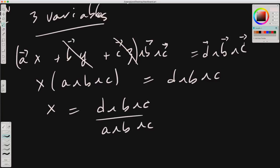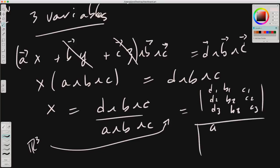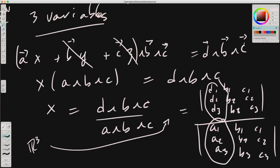So X equals D wedge B wedge C over A wedge B wedge C. It shouldn't surprise you that these wedge products can also be written as determinants in R3. In R3, this would be D1 D2 D3, B1 B2 B3, C1 C2 C3 divided by A1 A2 A3, B1 B2 B3, C1 C2 C3. Notice the first column has been swapped in the numerator, which is exactly the Cramer's rule solution for solving a 3x3 linear system.